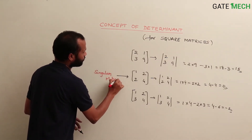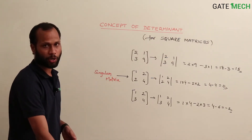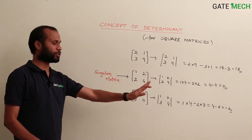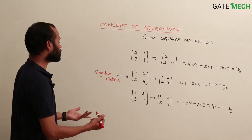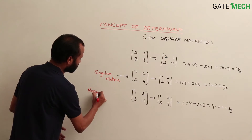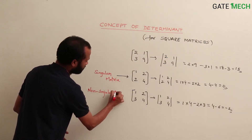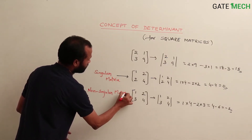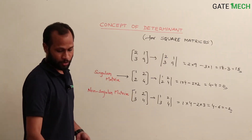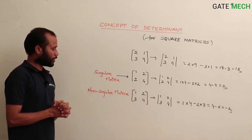A singular matrix is one whose determinant is 0. If the determinant is non-zero, those matrices are called non-singular matrices.